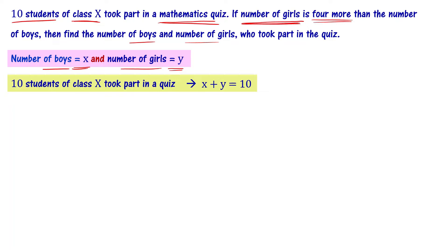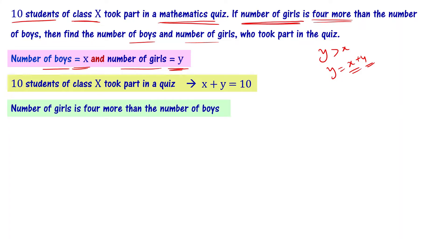The number of girls is 4 more than the number of boys, meaning y is greater than x. So the second equation is: y equals x plus 4. Now we have two equations — x plus y equals 10, and y equals x plus 4.